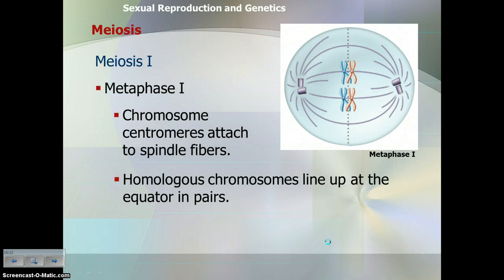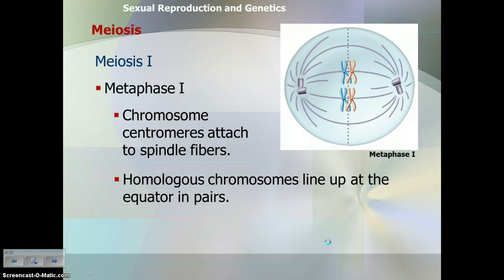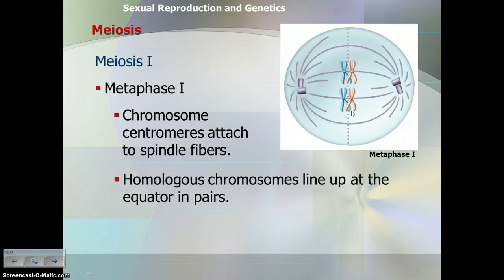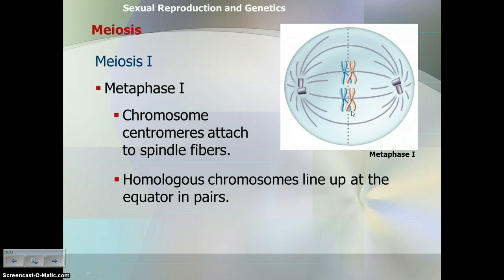In metaphase one, it's very similar to metaphase in mitosis, except the main difference is that when the chromosomes line up in the middle of the cell, they're still in their homologous pairs. Remember in mitosis they lined up single file one behind the other. In metaphase one of meiosis, the homologous chromosomes line up in pairs — underline, circle, star it — whatever you need to remember that.